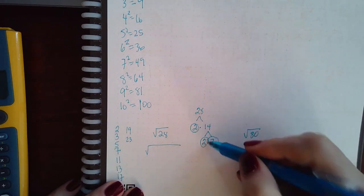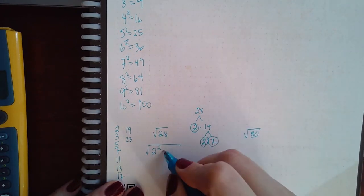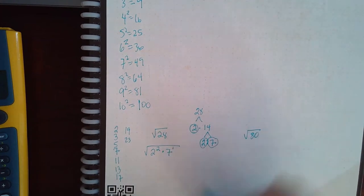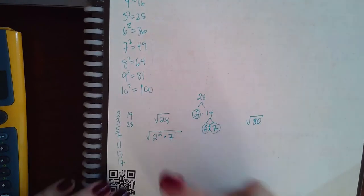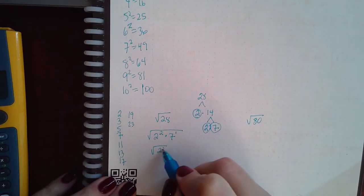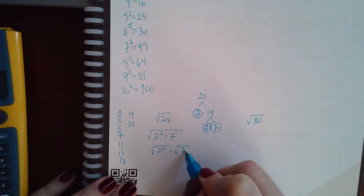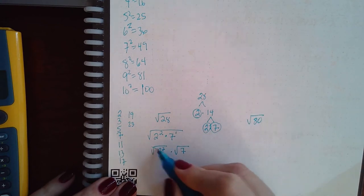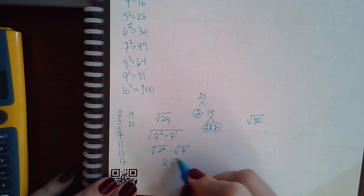So I can write 28 as—since there's two 2's—I would write 2 squared and then this extra 7, but I only have one of them. Then we can separate this and have 2 squared times square root of 7, and then the square and the square root cancel each other out, so I'm just left with 2 and then square root of 7.